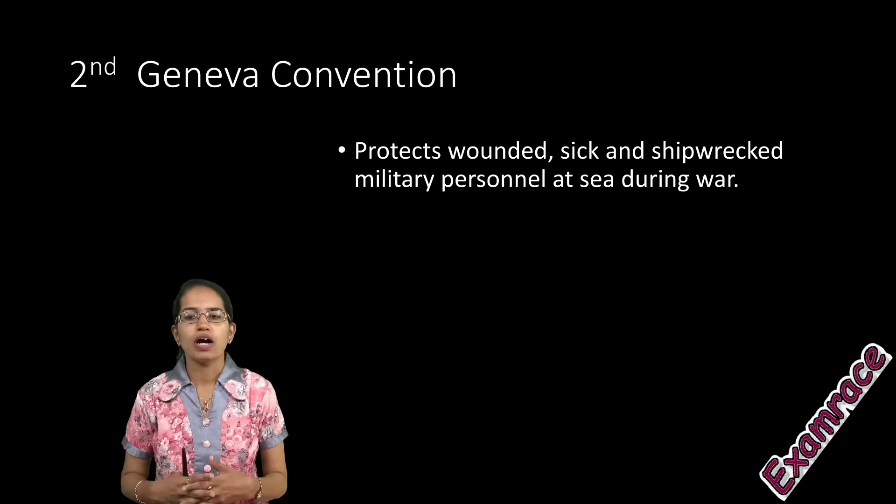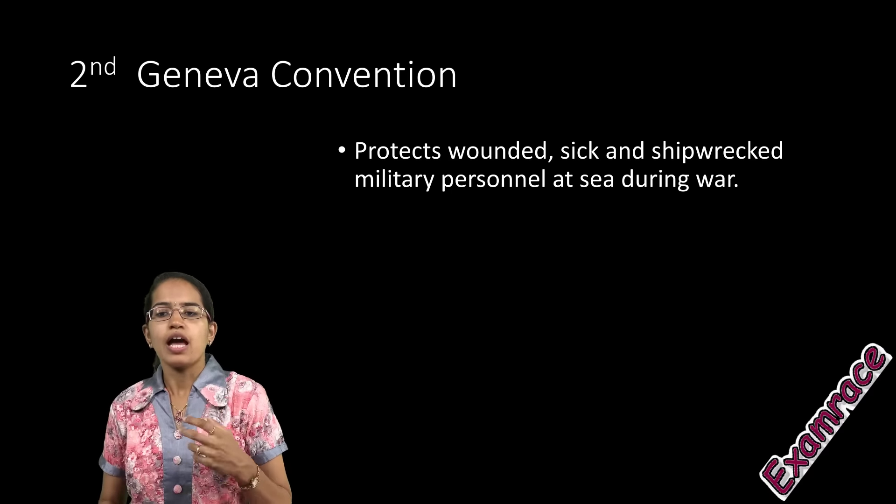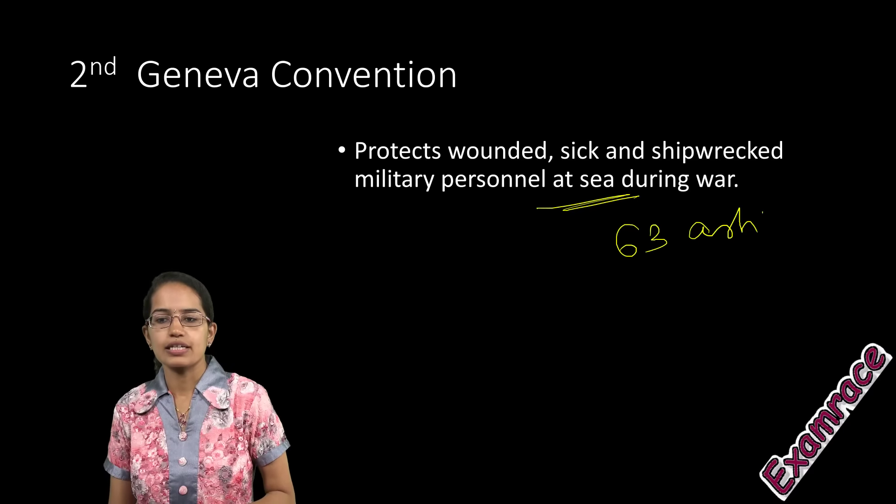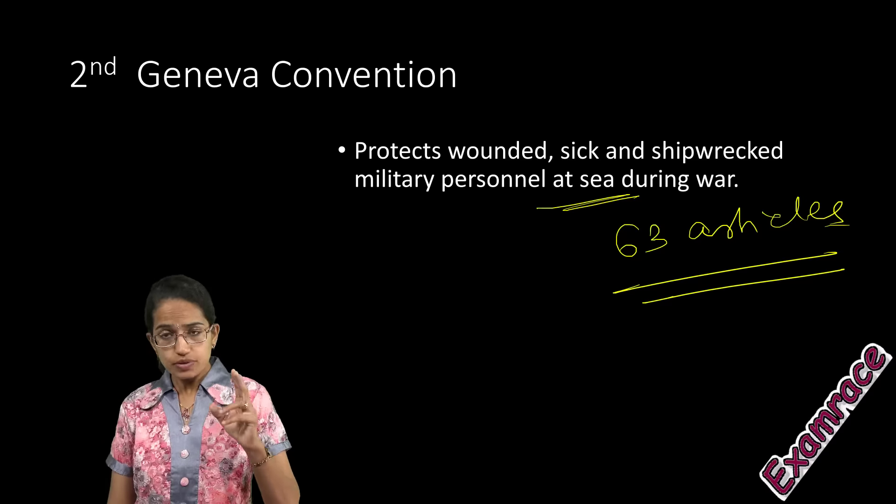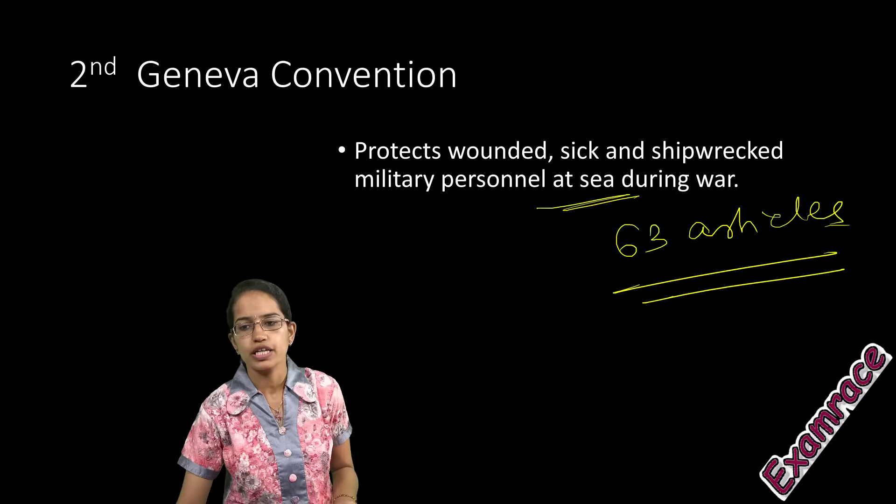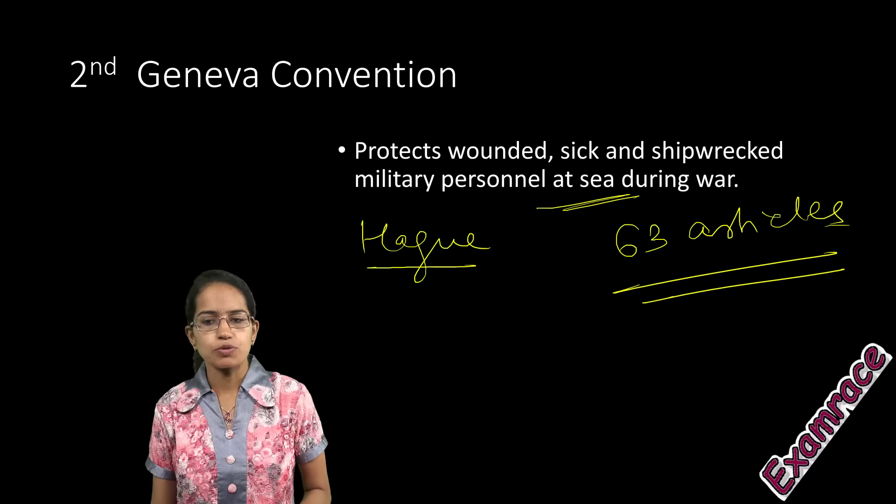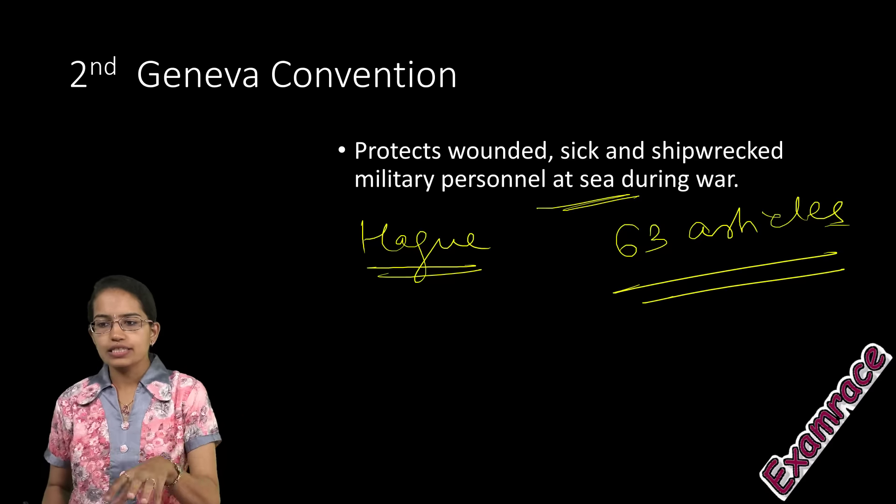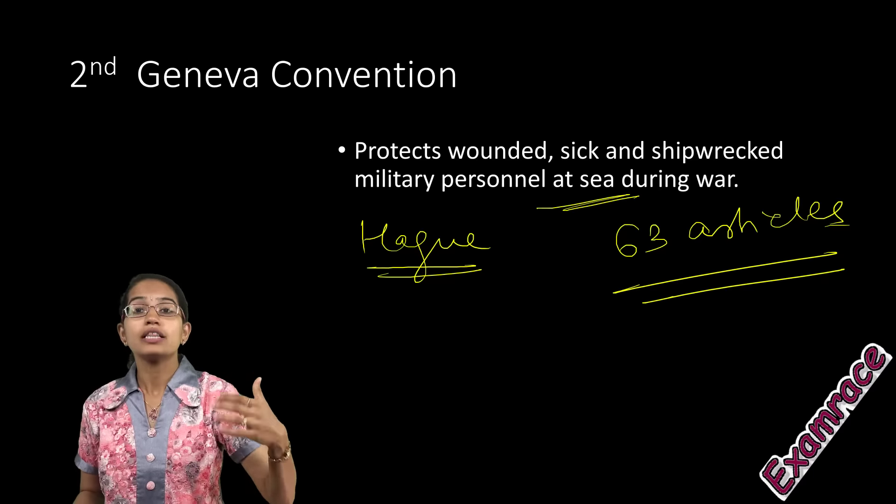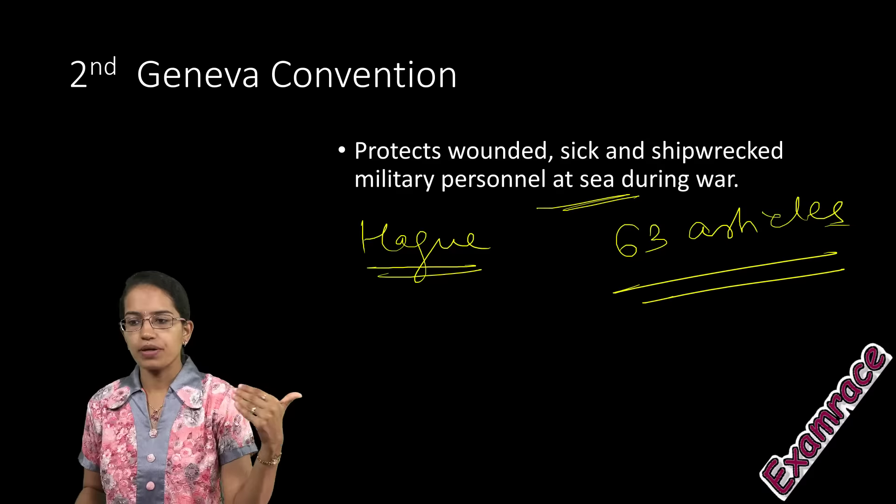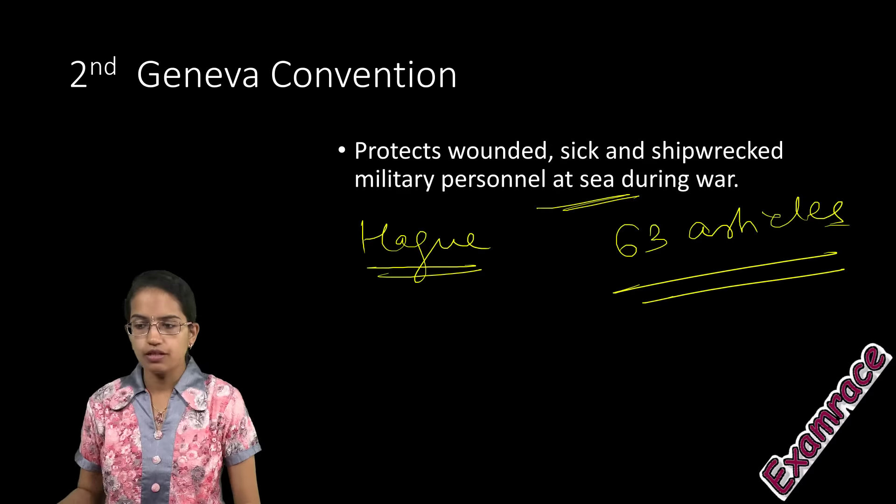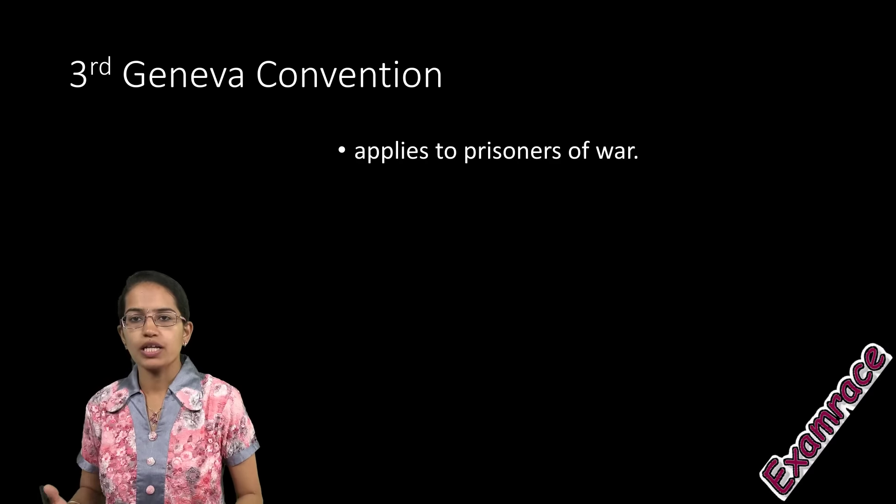The Second Convention provides protection for the wounded at sea during wartime and has 63 articles. This replaced the Hague Convention of 1907 for adaptation of maritime warfare. It protects people in hospital ships, not for any religious or personal motive, and provides a kind of role model card.